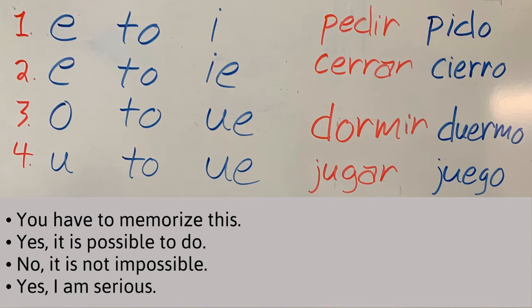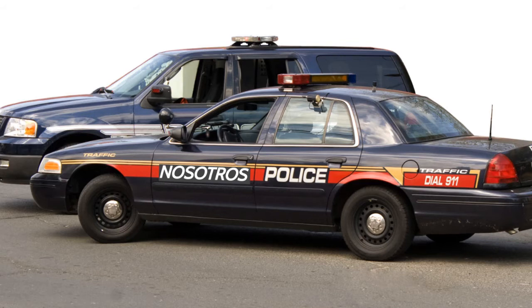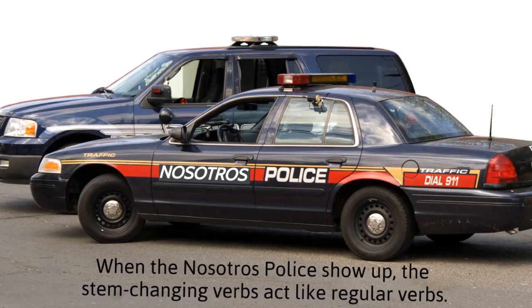But if you look at the board, I've written all of the stem changes we're working with. We have E to I, E to IE, O to UE, and U to UE. There's also a yo-form conjugated verb to give you an example of what each of those look like. Also remember, there is no stem change in the nosotros form or the vosotros form. Since we really don't use the vosotros form very much in the Western Hemisphere, that's one you're not tested on.